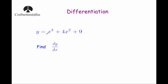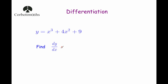Our next question: y equals x cubed plus 4x squared plus 9, find dy by dx. We differentiate each term separately. For x cubed: bring the power down giving 3x, reduce the power by 1 giving 3x squared. For 4x squared: 4 times 2 is 8, reduce the power by 1 giving 8x. For 9, which is just a constant: differentiating gives 0, so we don't write it. Therefore dy by dx equals 3x squared plus 8x.